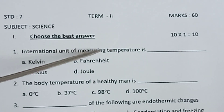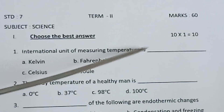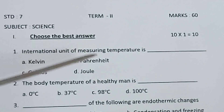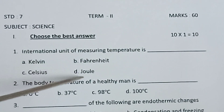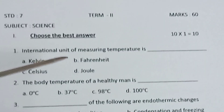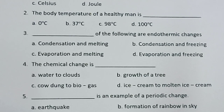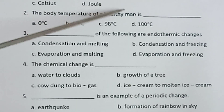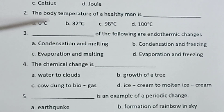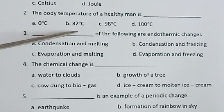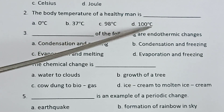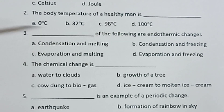First one: The international unit of measuring temperature is dash — Kelvin, Fahrenheit, Celsius, Joule. Second one: The body temperature of a healthy man is dash — 0 degree Celsius, 37 degree Celsius, 98 degree Celsius, 100 degree Celsius.